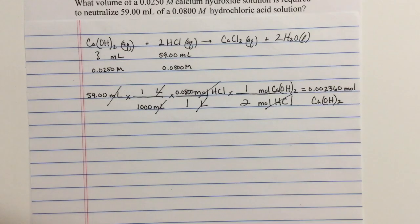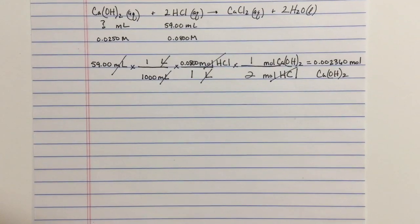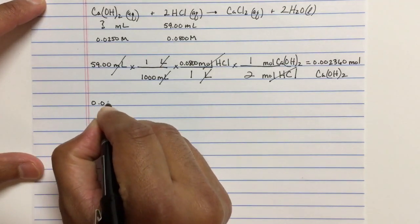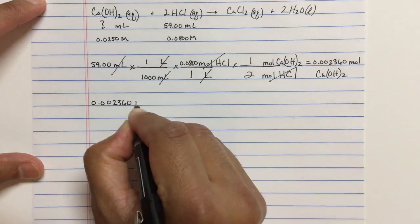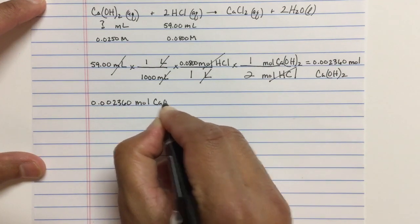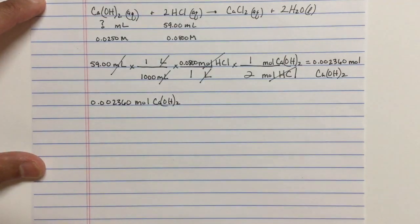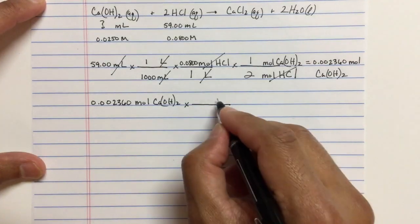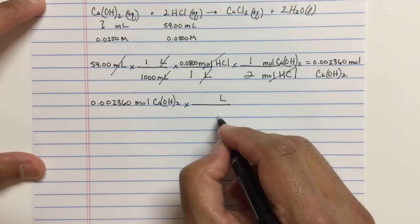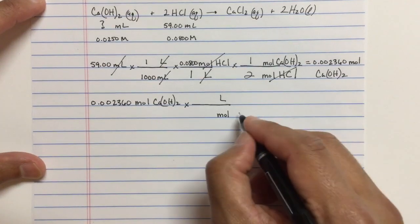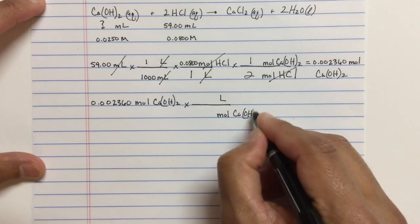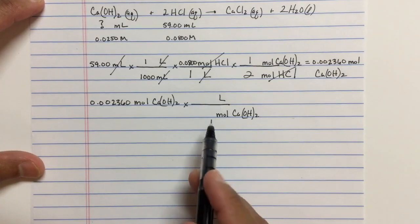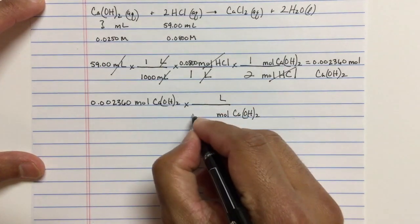Now we know the moles of calcium hydroxide. What we want to do is go find the volume. Let's take our 0.002360 mole of the calcium hydroxide and convert to the volume. Let's cancel mole of the calcium hydroxide. The relationship of moles and liters is the molarity, and of course, that number is given to us. From the problem, there's 0.0250 moles for every one liter.